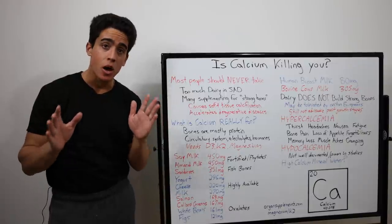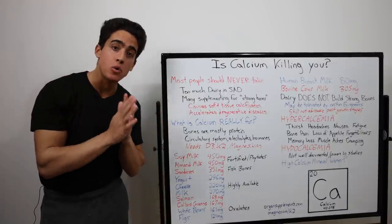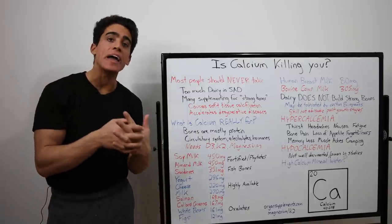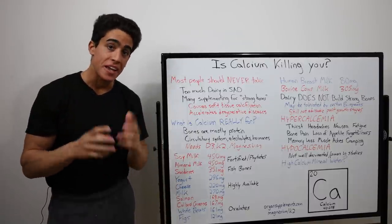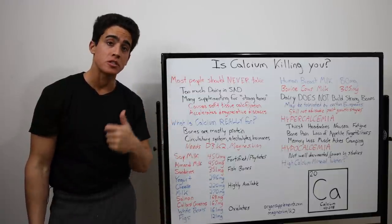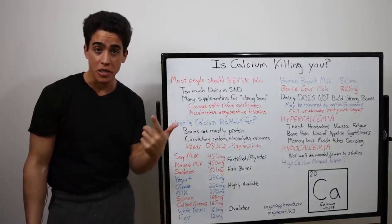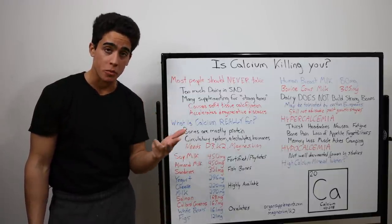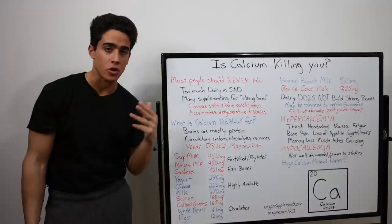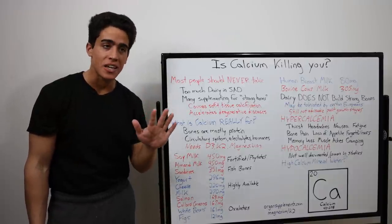In reality, bone is composed mostly of collagen, which is from amino acids - eating meat. Calcium is only needed in small amounts for circulatory functions, an electrolyte component of muscular contractions, and hormone production.